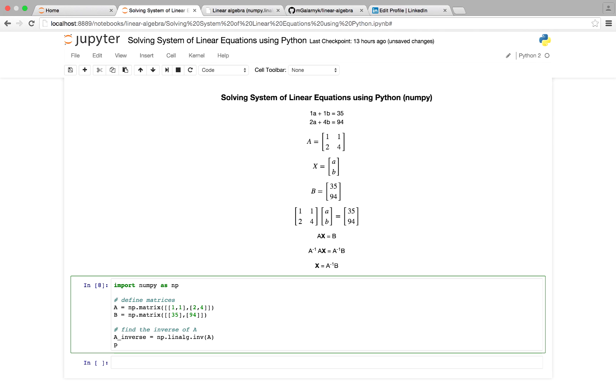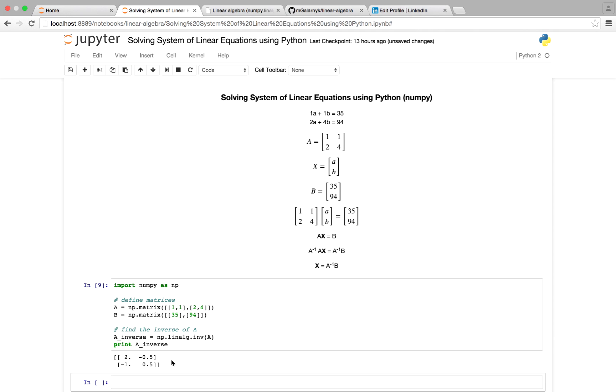And if you want to just find the inverse for some reason, you can just print out the variable A underscore inverse. And that is A inverse.